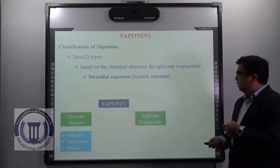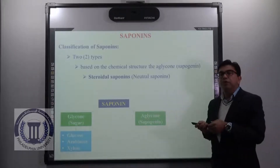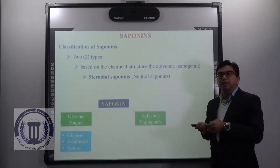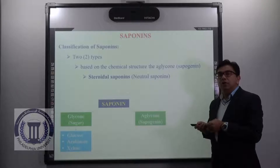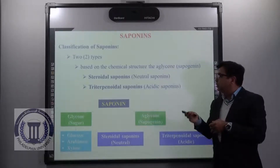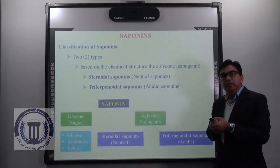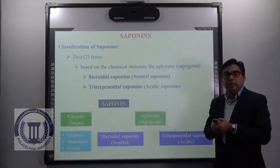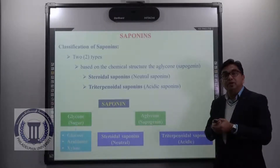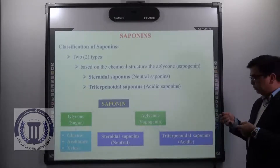The first type is steroidal saponins, which are found to be neutral in pH — that is why they are also known as neutral saponins. The second one is triterpinoidal saponins, which are found to be acidic in pH, and because of the presence of various acidic functional groups, triterpinoidal saponins are also known as acidic saponins.